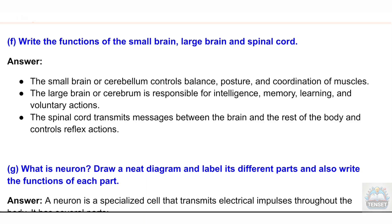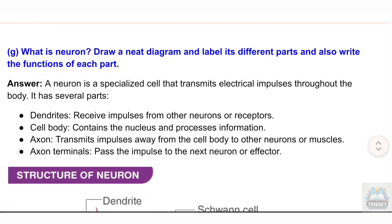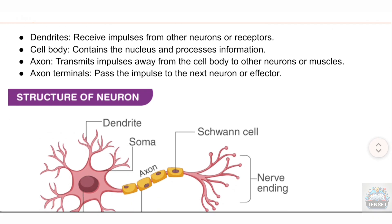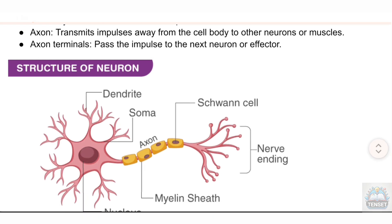(g) What is a neuron? Draw a neat diagram, label its parts, and write the functions of each. Answer: A neuron is a specialized cell that transmits electrical impulses throughout the body. It has several parts: dendrites receive impulses from other neurons or receptors; the cell body contains the nucleus and processes information; the axon transmits impulses away from the cell body to other neurons or muscles; and axon terminals pass the impulse to the next neuron or effector.